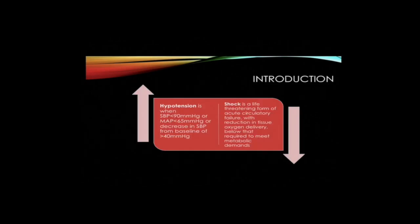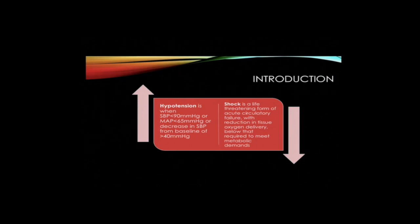Hypotension occurs when the systolic blood pressure is less than 90 mmHg, the mean arterial pressure is less than 65 mmHg, or when there is a decrease in systolic blood pressure from baseline of more than 40 mmHg.